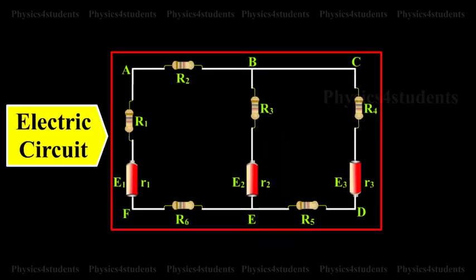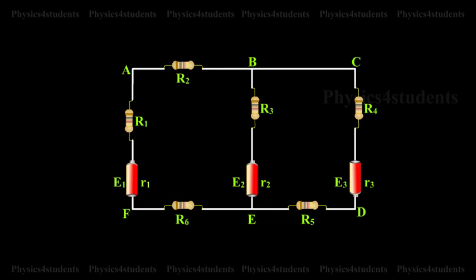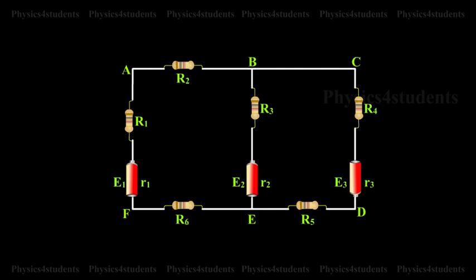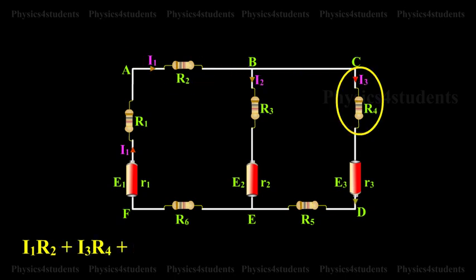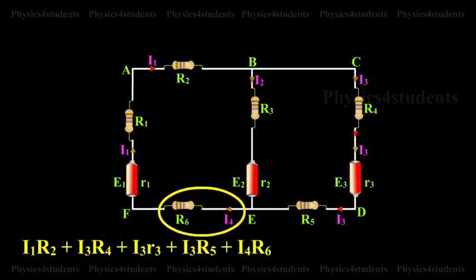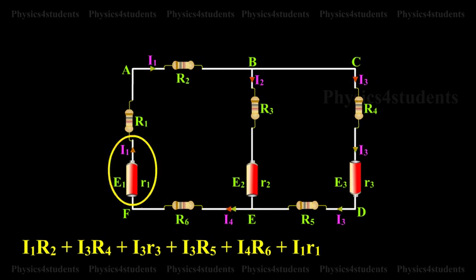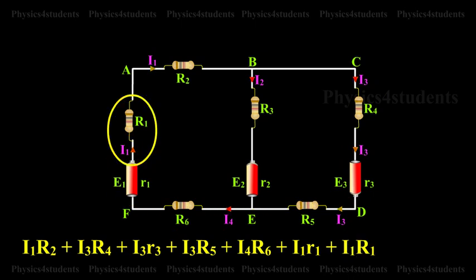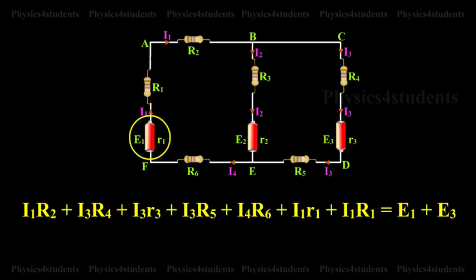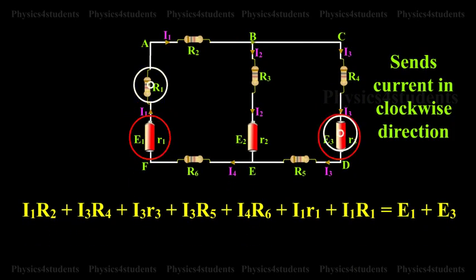Let us consider the electrical circuit given in the animation. Considering the closed loop A, B, C, D, E, F, A: I1·R2 + I3·R4 + I3·R3 + I3·R5 + I4·R6 + I1·R1 = E1 + E3. Both cells E1 and E3 send currents in the clockwise direction.